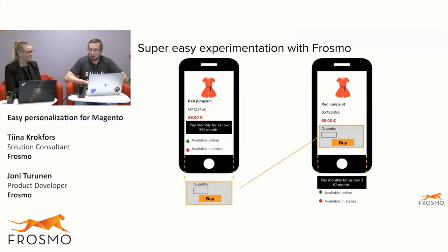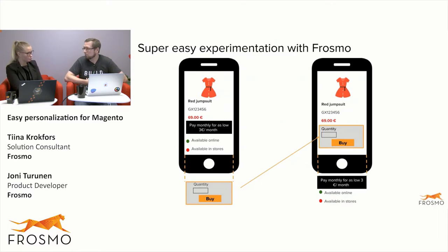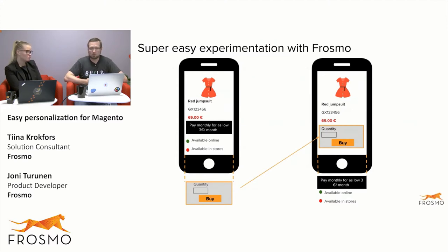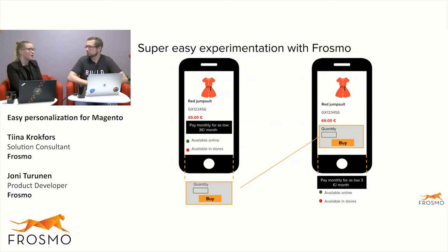One example of what we did for a client: Magento provides responsive web pages out of the box, which is a nice feature. But in this case, the buy button ended up below the fold on mobile, so users couldn't see it without scrolling. With Frosmo, we experimented with bringing the buy button to the first screen so users don't have to scroll — would it help the conversion rate? The results were really positive.